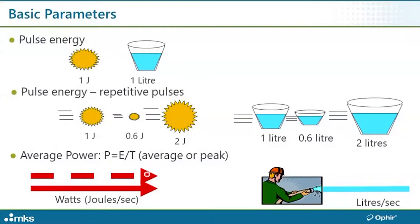On the other hand, I may have a different application in which I again have a repetitively pulsed beam, but I might not really care about the individual energy in each pulse. I might only be interested in the overall rate of flow of energy, the number of joules per second that are coming through. That's what we call power. One watt is one joule per second.